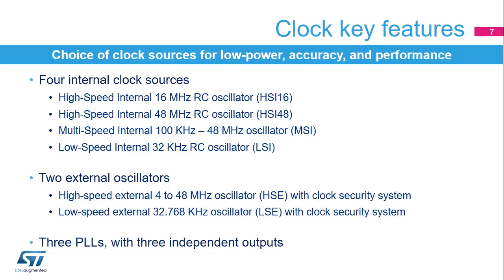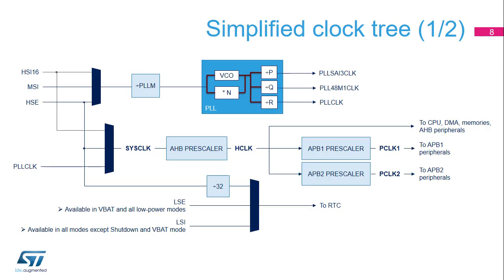The PLLs present in the STM32L5 have three independent outputs in order to offer different frequency options to the CPU and peripherals. The system clock can be derived from the HSI16, the HSE, the MSI, or from the PLL-CLK output of the PLL. The AHB clock, called HCLK, is derived by dividing the system clock by a programmable prescaler. The APB clocks, called PCLK1 and PCLK2, are generated by dividing the AHB clock by programmable prescalers.